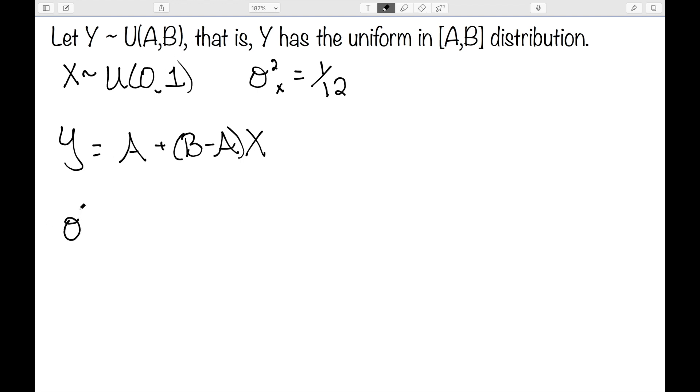So my variance for y is the number in front of x squared. So we have b minus a squared times the variance for x, 1 over 12. In other words, b minus a squared all over 12.